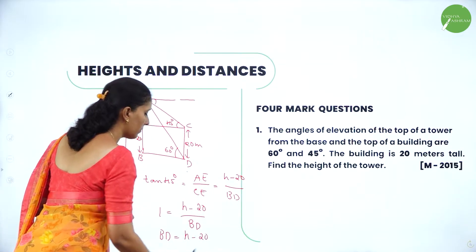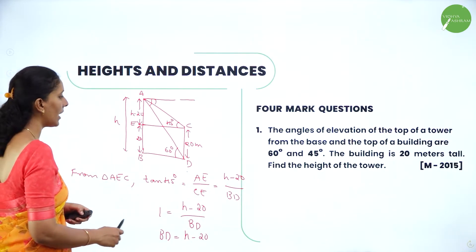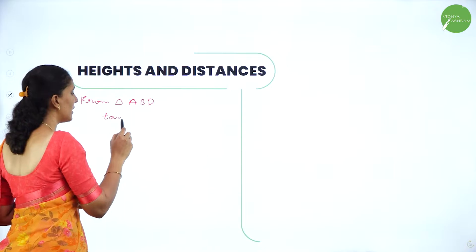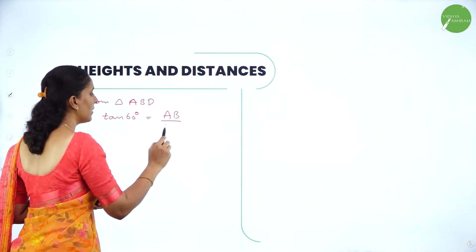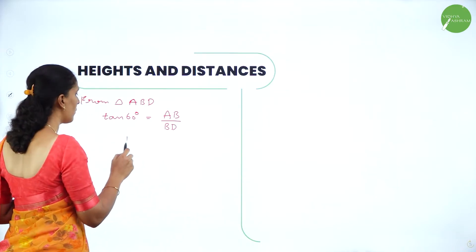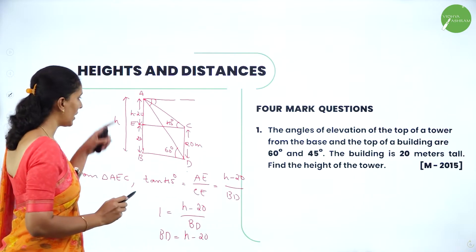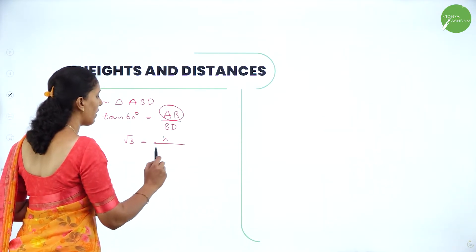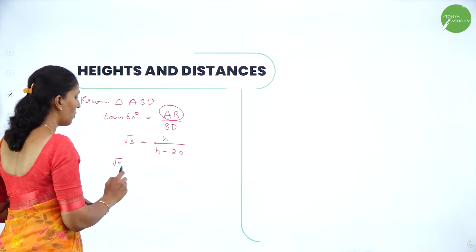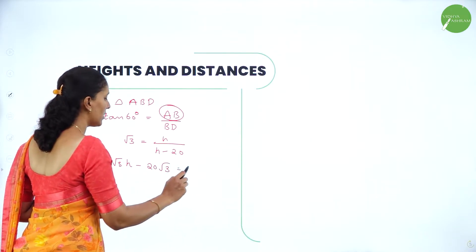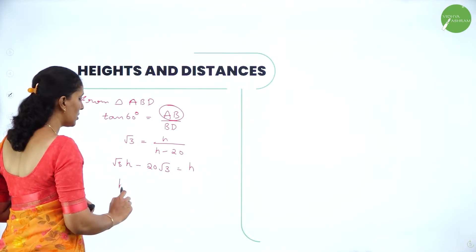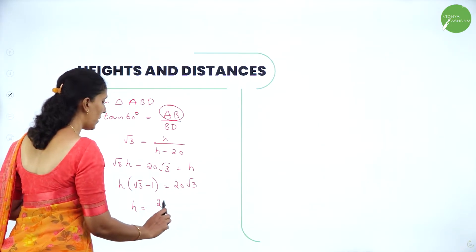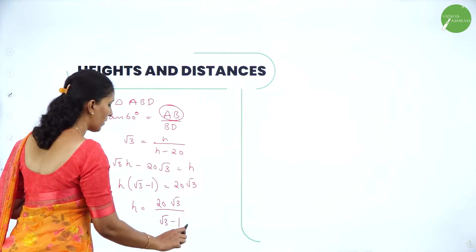Now from triangle ABD, tan 60° = AB by BD. Tan 60° is √3. AB is the height H, and BD is H minus 20. So √3 = H / (H − 20), giving us √3·(H − 20) = H, or √3·H − 20√3 = H. Taking H as a common factor, we get H(√3 − 1) = 20√3, so H = 20√3 / (√3 − 1).